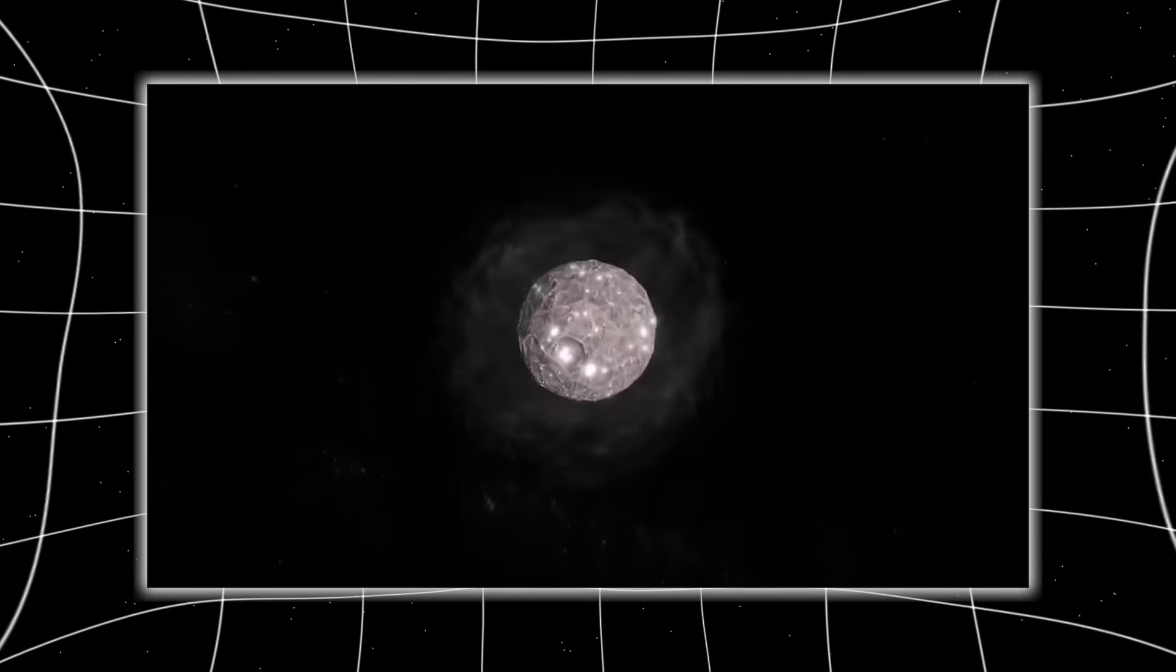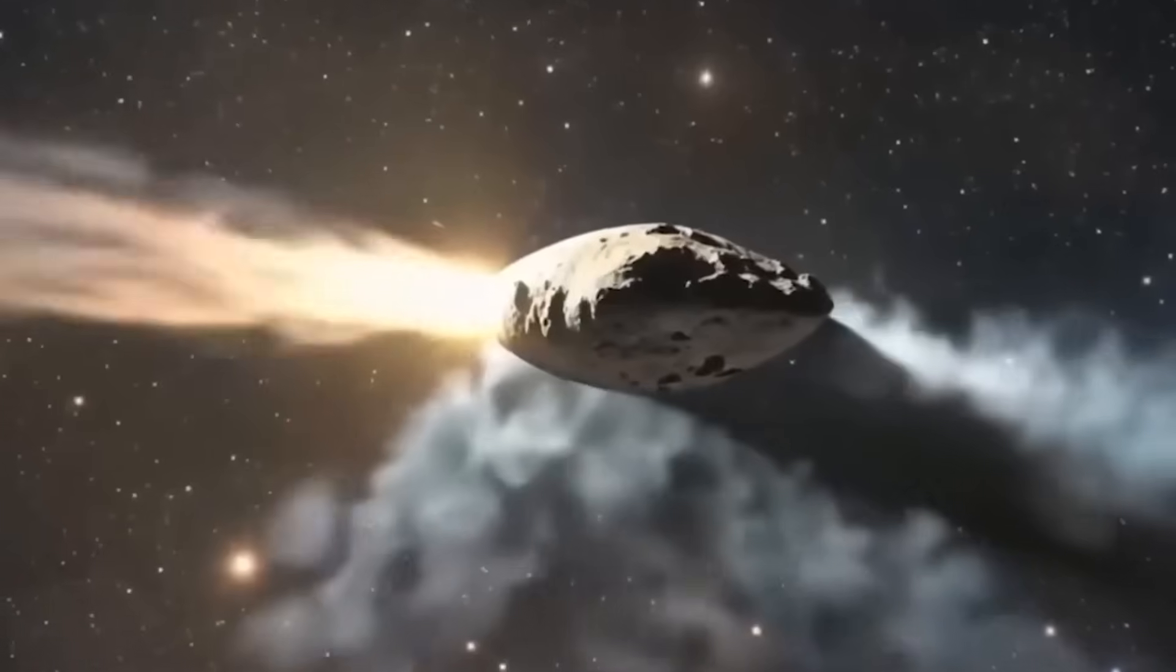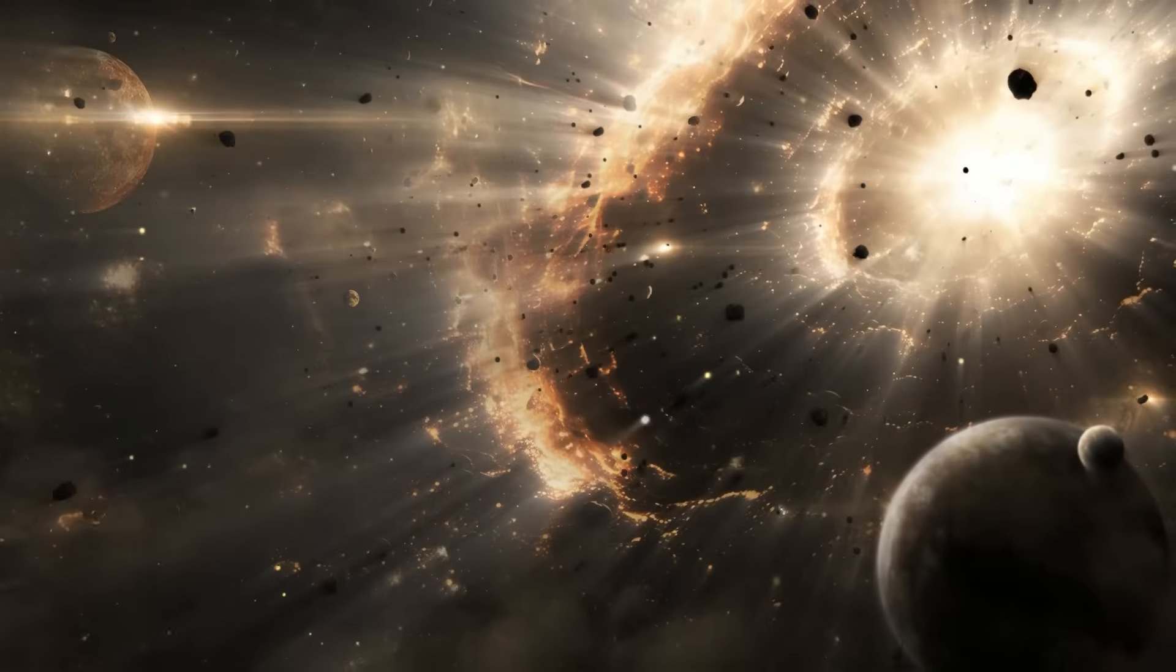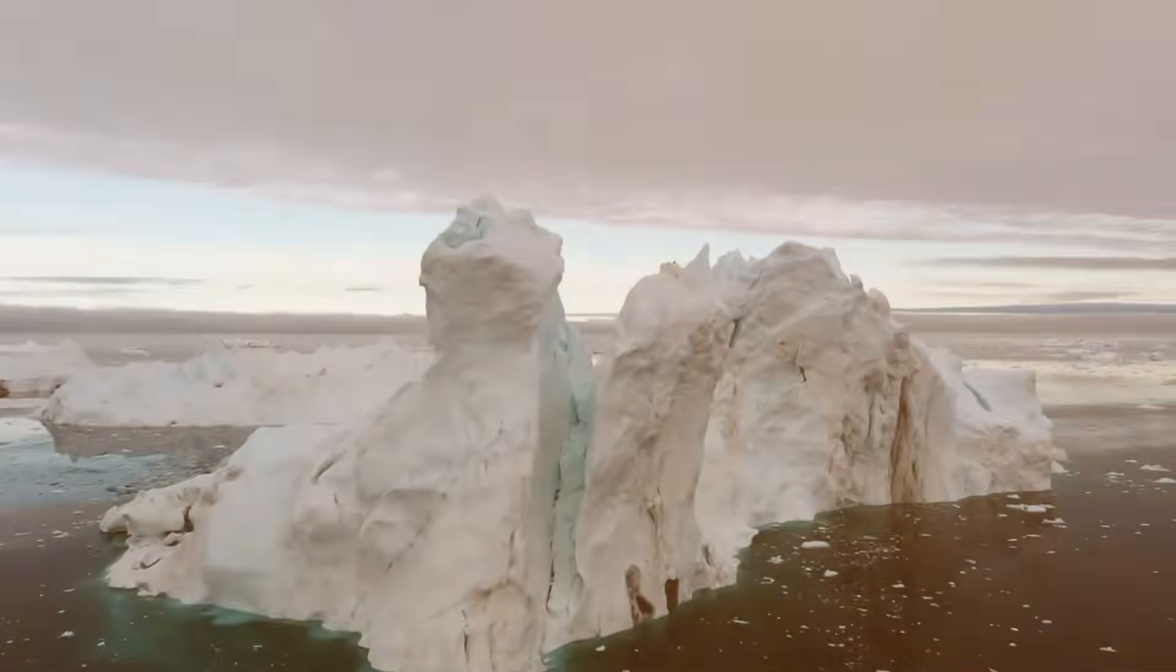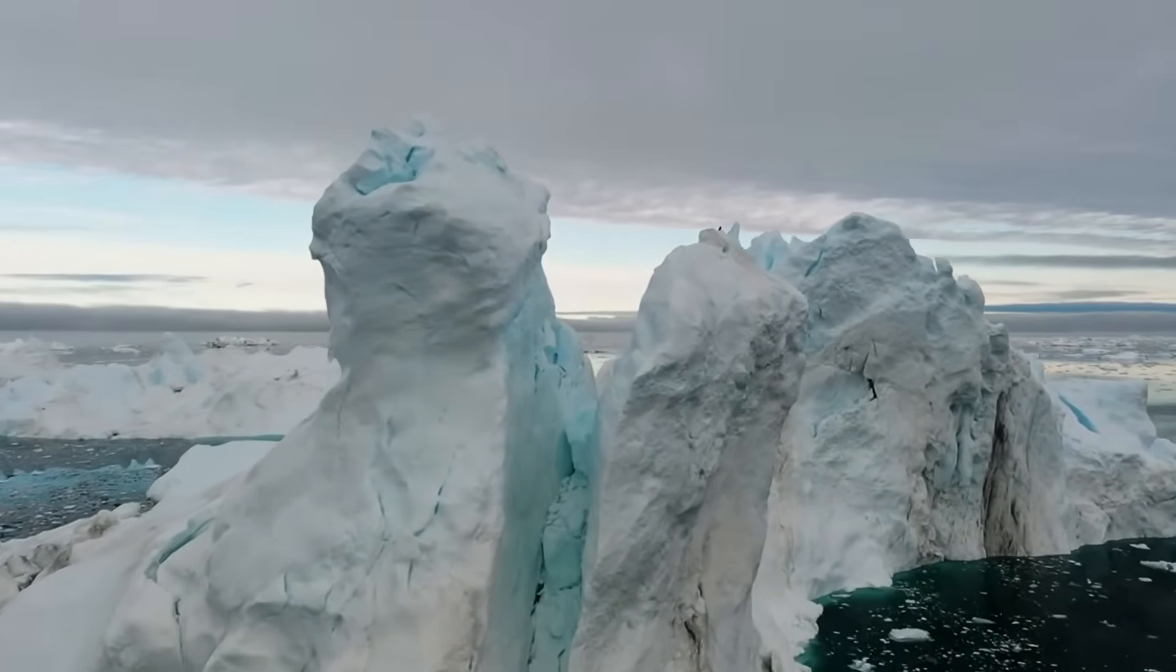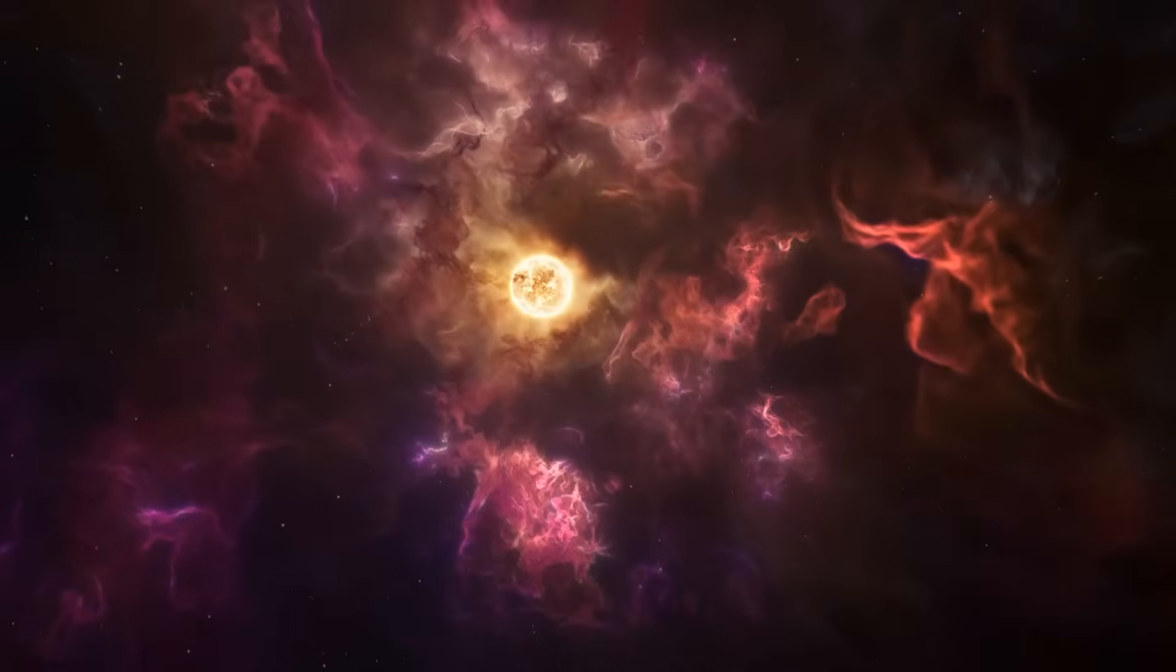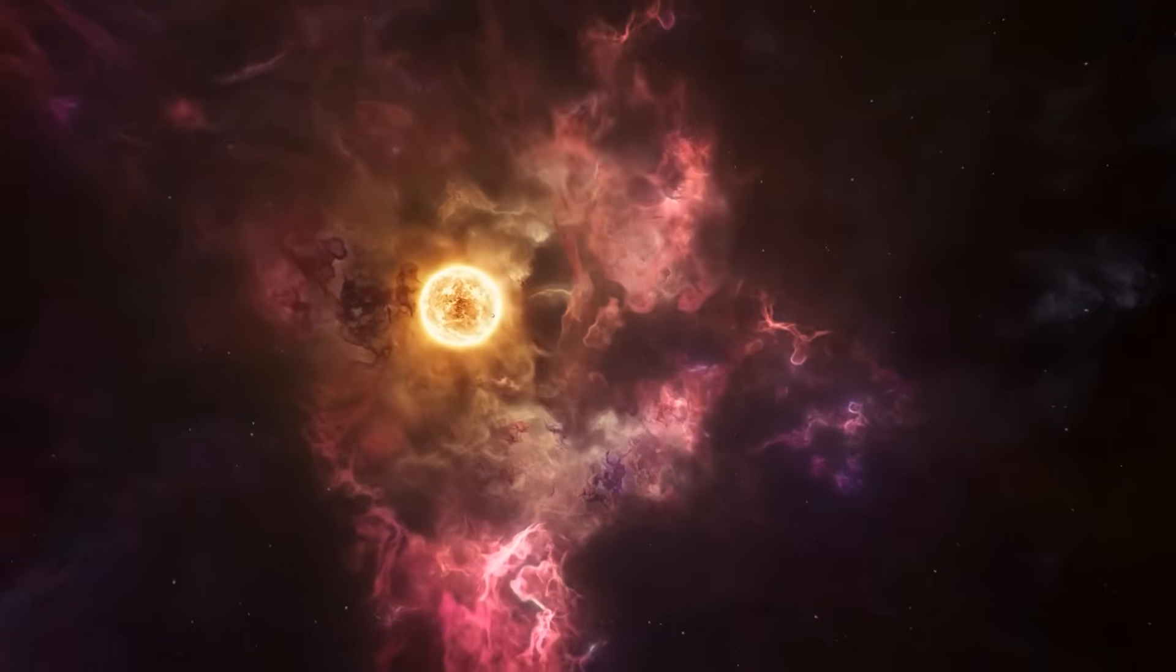In this scenario, the object's surface could host cryovolcanism, ice volcanoes driven by internal chemical reactions rather than solar heat, similar to what we observe on bodies like Enceladus or Triton in our own solar system. Spectral similarities to pristine meteorites found in Antarctica further support this idea, hinting at a metal-rich interior capable of sustaining reactions that release energy long after formation.